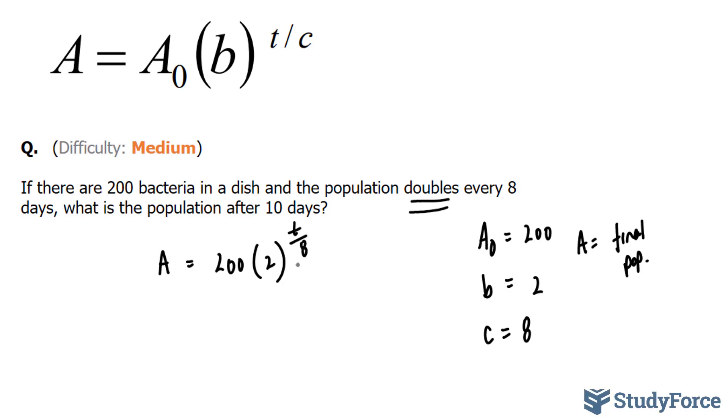Now we are asked, what is the population after 10 days? So we'll apply t is equal to 10. If we do that, 200 times 2 to the power of 10 over 8 gives us the following.